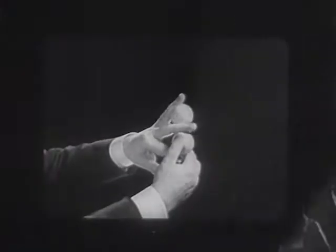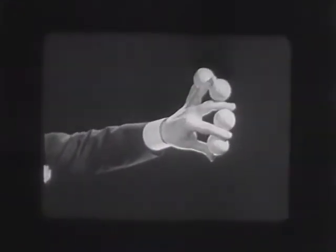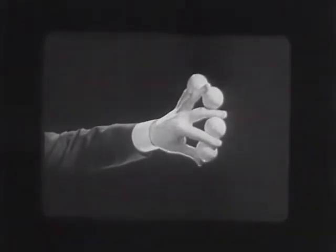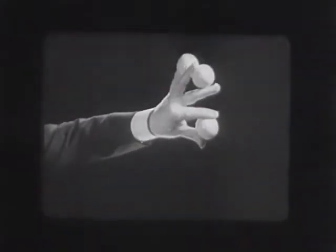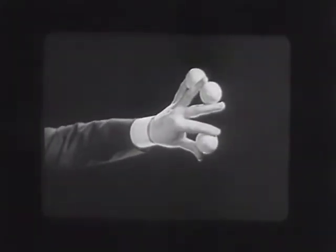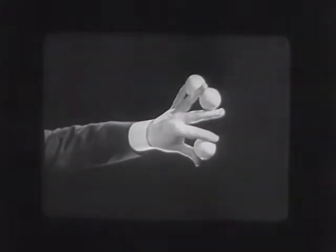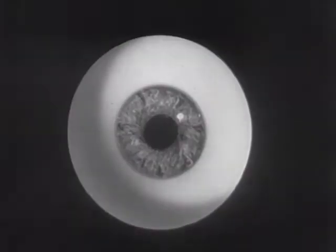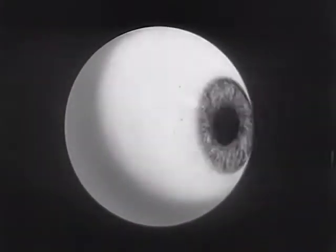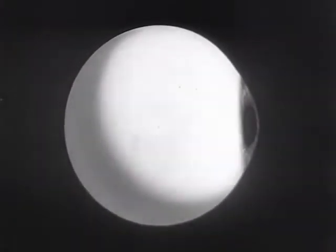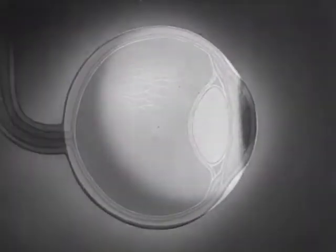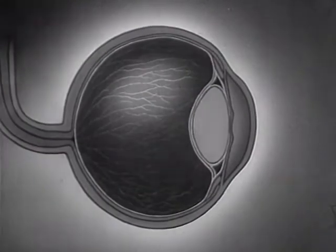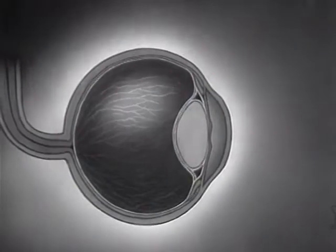Motion pictures are based on an optical illusion — just another case where seeing is believing. To understand how we see, let's turn the tables on the human eye and look at it instead of through it.